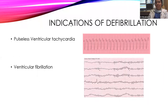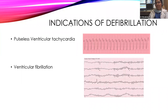Indications of defibrillation: when do you use defibrillation? The first indication is pulseless ventricular tachycardia and the second indication is ventricular fibrillation — as seen on the ECG, this is pulseless VT without a pulse, and this is VF.